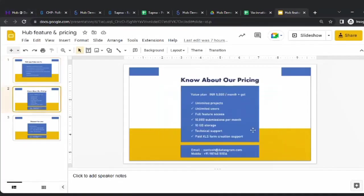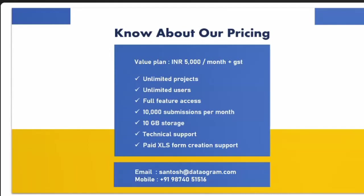In terms of pricing, we are offering a value plan at just 5,000 rupees a month — significantly lower than KoboToolbox paid or ODK paid. There are no limitations on how many projects or users, and all features are available. You can have up to 10,000 submissions per month and 10 GB of storage. We are always available to guide you technically. We will keep conducting group trainings for form building and dashboarding. For complex forms, you can reach out to us — we have fair pricing of 90 rupees per hour.